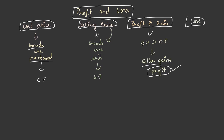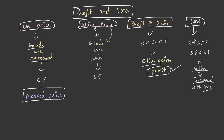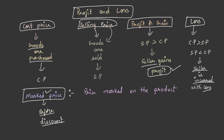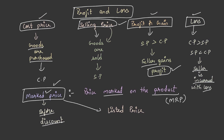When the cost price is greater than the selling price — or the selling price is less than the cost price — the seller incurs a loss. There is another important concept: marked price. Marked price is the price before discount, or the price marked on the product, also known as MRP or listed price.